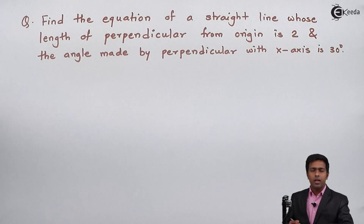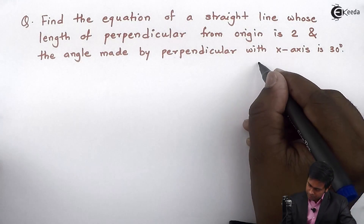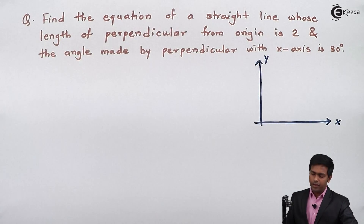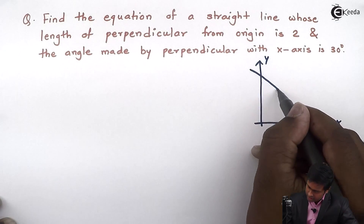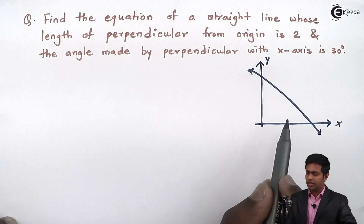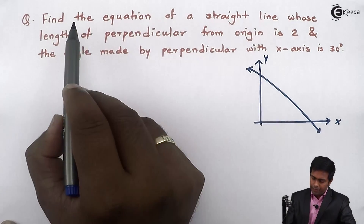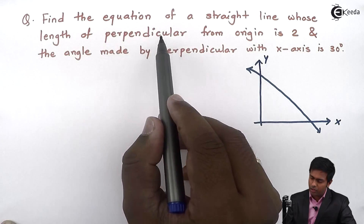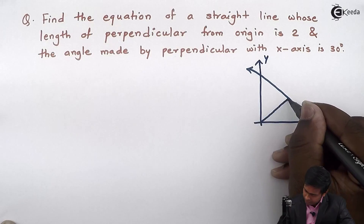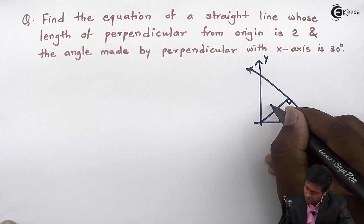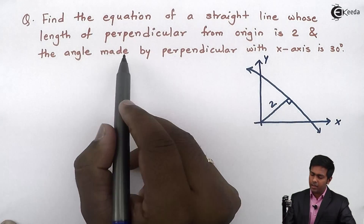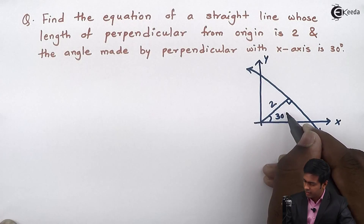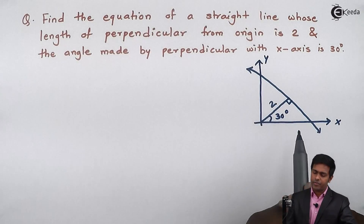Before starting with the solution, let's visualize the given problem. Here we have the x and y-axis. This is the required straight line. We draw the perpendicular from the origin — the length of this perpendicular is 2, and the angle made by the perpendicular with the x-axis is 30 degrees. We have to find out the equation of this line.